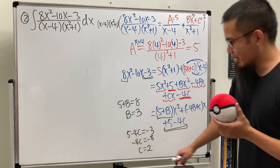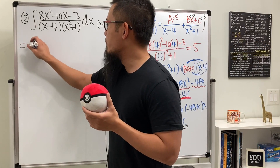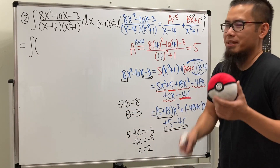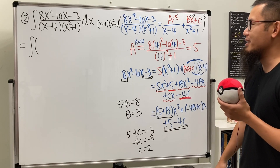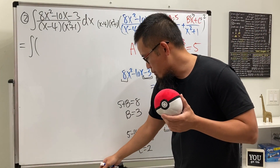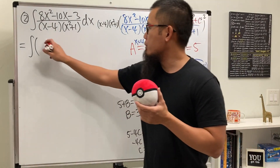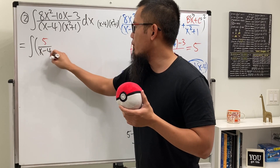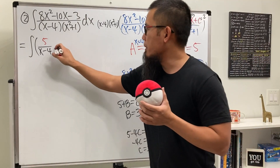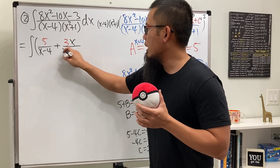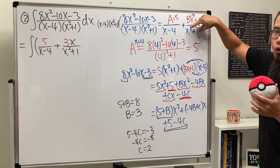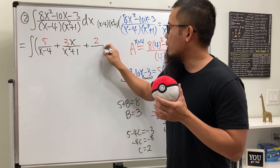Now let's integrate. We break the expression into three parts: 5 over (x minus 4), plus 3x over (x squared plus 1), plus 2 over (x squared plus 1). We split it this way so each piece can be integrated individually.